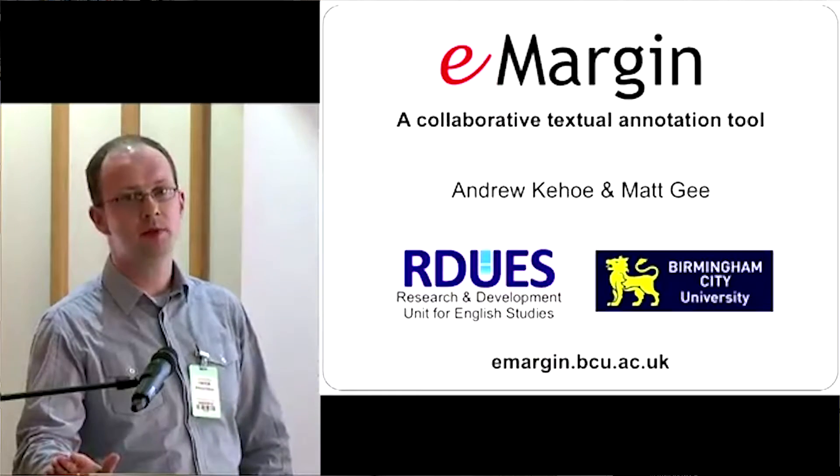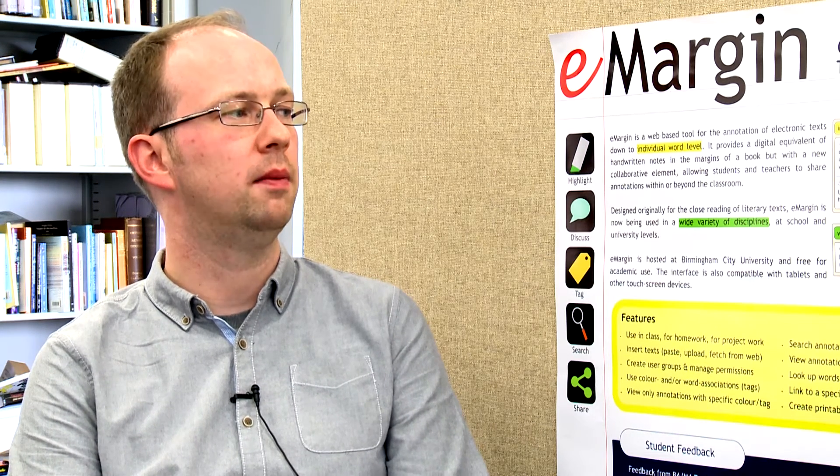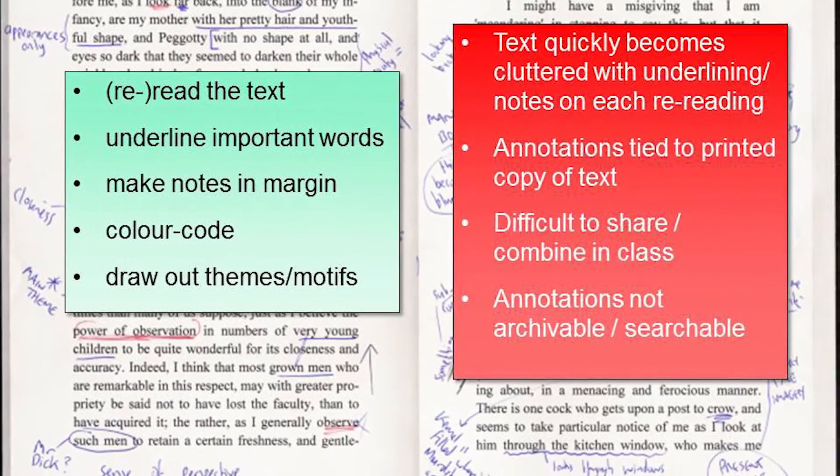What we were trying to achieve with eMargin was to overcome some of the limitations of the traditional approach to text analysis in academic study, but also in general. The fact that when you're annotating a printed text, it becomes quite difficult to isolate the different threads of analysis as the page becomes more cluttered with handwritten notes. It becomes very difficult to read. But the big limitation increasingly is the growth of electronic texts and the fact that it's very difficult to annotate electronic texts effectively down to the level that you need for close reading for academic study.